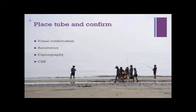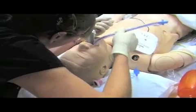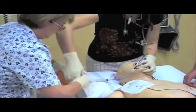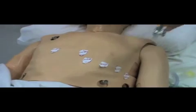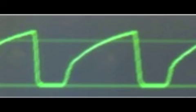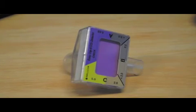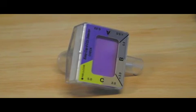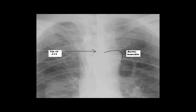Once the tube is placed through the cords and secured, the tube position must be confirmed. Aside from watching the tube go through the cords, placement is usually confirmed with a combination of auscultation and capnography. Auscultation of the axillae to confirm air entry and the epigastrium to exclude stomach inflation may help. Capnography, either continuous electronic modes or a colourimetric capnograph as shown, also confirms tracheal placement. A chest X-ray will subsequently be required to confirm the position of the tube within the airway.